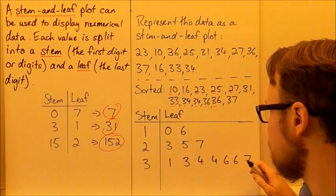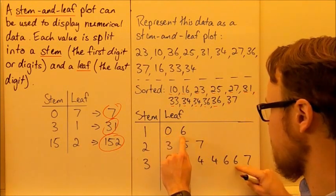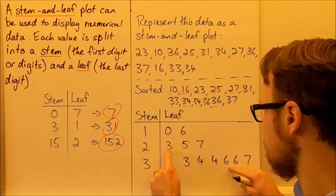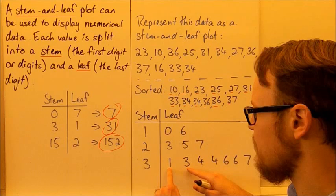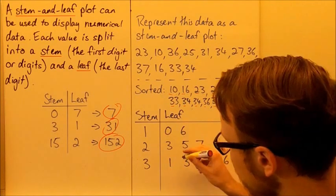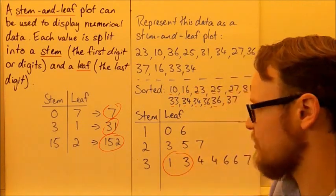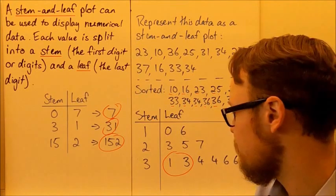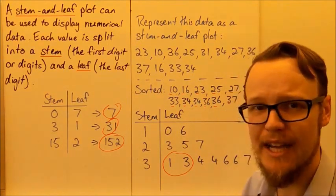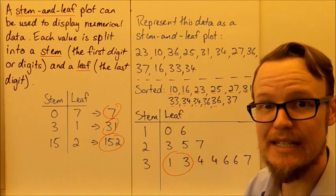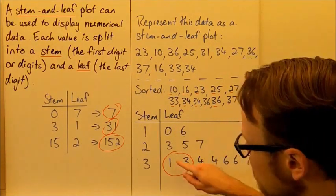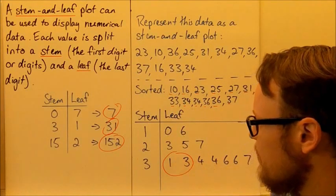So our middle values, if we go, we can count backwards if we want to see where the middle values are going to be. So our middle values are going to be 31 and 33. So I know that my median is going to be in between 31 and 33. Add those together, divide by 2, 31 plus 33 is 64. 64 divided by 2 is 32. So our median is going to sit right in the middle here.